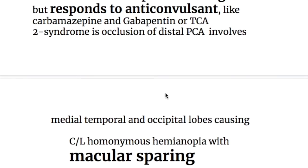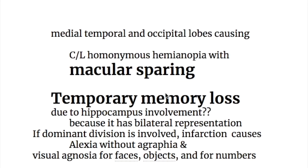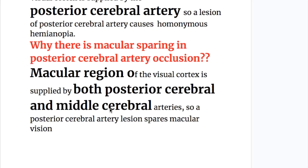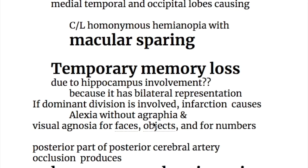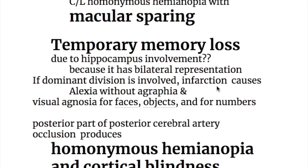The second syndrome is due to occlusion of the distal posterior cerebral artery, which supplies the medial temporal and occipital lobe, causing contralateral homonymous hemianopia with macular sparing. Macular sparing occurs because the macular region of the visual cortex is supplied by both posterior cerebral and middle cerebral artery branches. There is also temporary memory loss due to hippocampus involvement, which is temporary because memory has bilateral representation. If the dominant division is involved, infarction causes alexia without agraphia and visual agnosia for faces, objects, and numbers.